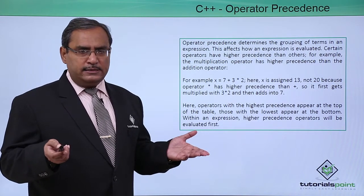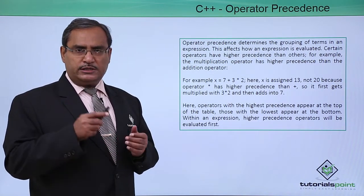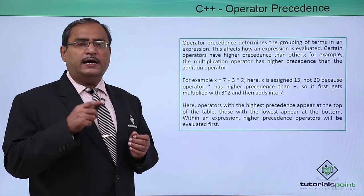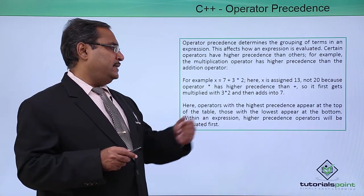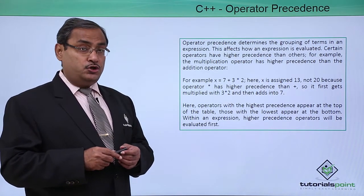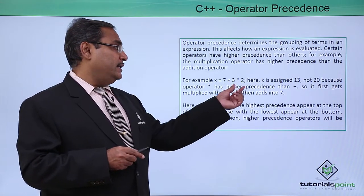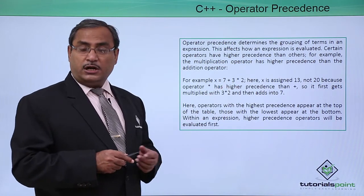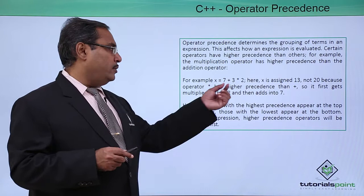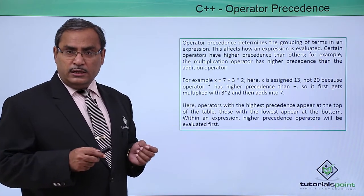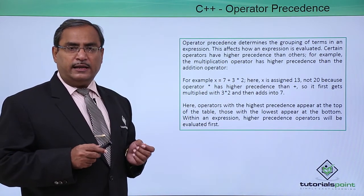As an example, we can easily say that multiplication operator star has precedence higher than the plus operator. For example, x equals 7 plus 3 star 2. In this case, this will produce the value 13 and that will be assigned to x because star has precedence higher than plus.